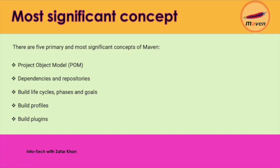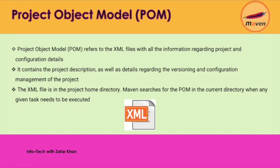The POM refers to the XML file with all the information regarding the project and configuration details. Whatever configuration details are required for a particular project, the POM contains all that information. You have to provide that information inside the POM file and it will automatically download from the central repository if it is not present in the local repository. It contains the project description as well as details regarding versioning and configuration management. The XML file is in the project home directory; Maven searches the POM in the current directory when any given task needs to be executed.